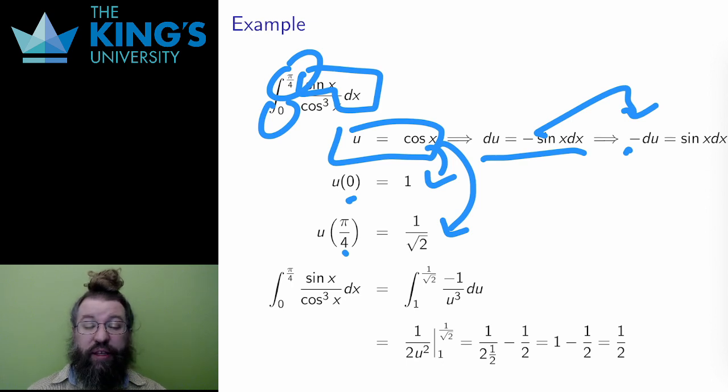Then I change everything in the integral. The new bounds are 1 to 1 over root 2. The sine x dx is replaced with negative du. The cos cubed becomes u cubed in the denominator, and the result is a reverse power rule integral. The antiderivative of negative 1 over u cubed is 1 over 2 u squared. And finally, I evaluate on the bounds and simplify to get a result of 1 half.